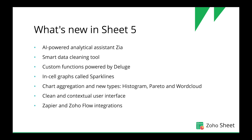We also introduced chart aggregation and three new chart types: histogram, Pareto, and word cloud. One of the major changes in this version is a completely revamped user interface with a clean, contextual side panel that gives you options based on the feature you are currently using. Finally, Zoho Sheet integrated with Zapier and Zoho Flow, so you can create automated workflows across hundreds of other applications such as Zoho CRM, Trello, Mailchimp, and more.